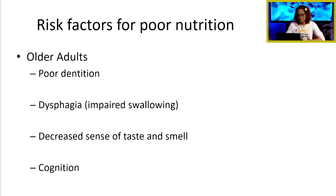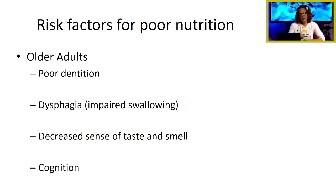In terms of nutrition, we want to think about risk factors for poor nutrition, particularly in older adults. Poor dentition is one factor. If a patient has difficulty chewing because they can't find their dentures, or they have a sore or abscess in their mouth causing pain, they're going to be less likely to comfortably chew and eat their food.